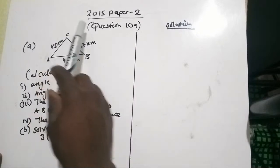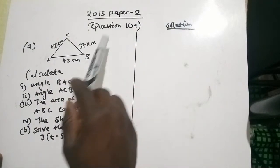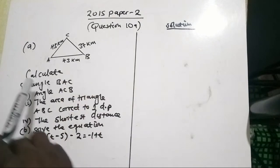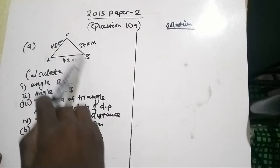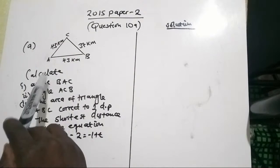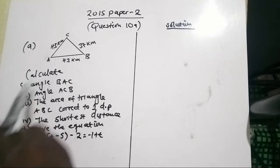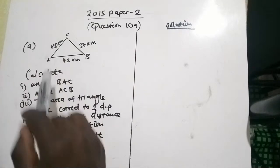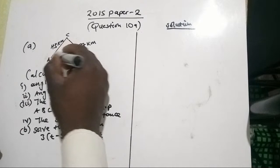Welcome back. Today we're looking at the 2015 Paper 2 Math, question 10A. We have a diagram with triangle ABC under trigonometry.